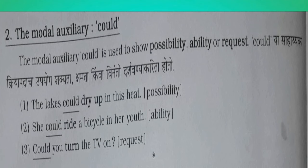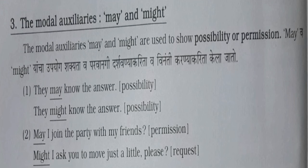Next Modal Auxiliary is Could. The Modal Auxiliary Could is used to show possibility, ability, or request. Example one: 'The lakes could dry up in this heat' — 'could' indicates possibility. Next one: 'She could ride a bicycle in her youth' — it shows ability. And next one: 'Could you turn the TV on?' — here 'could' indicates request.